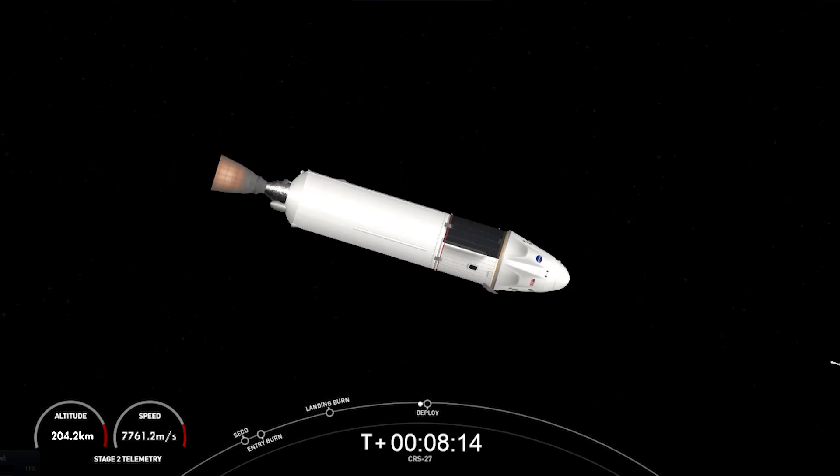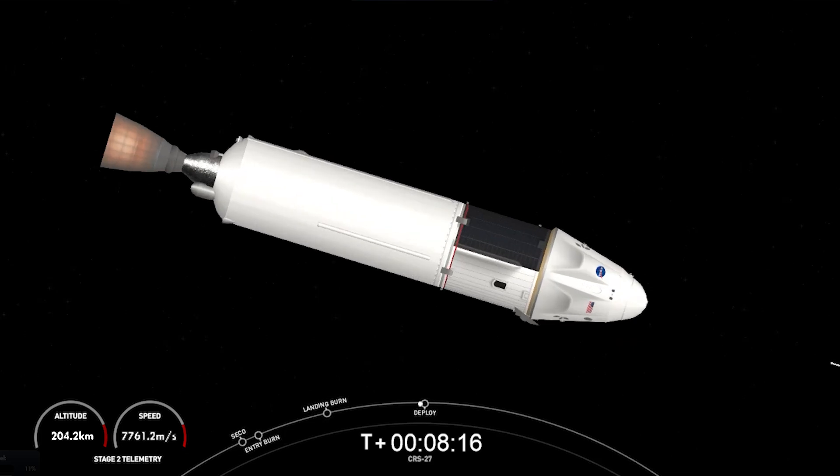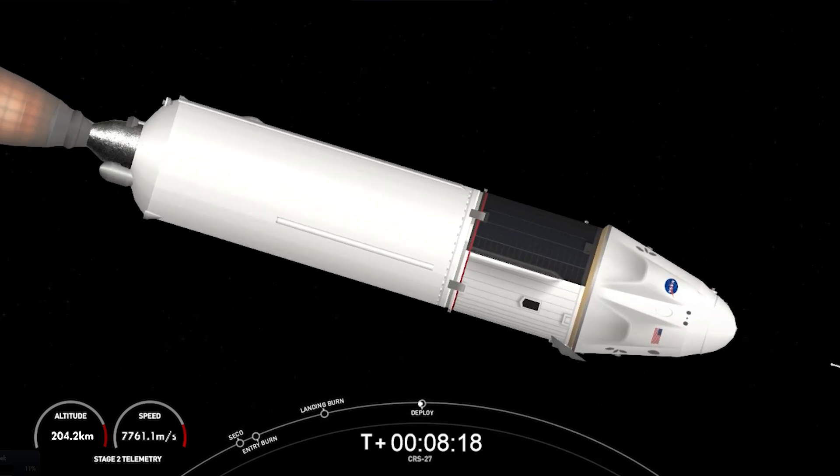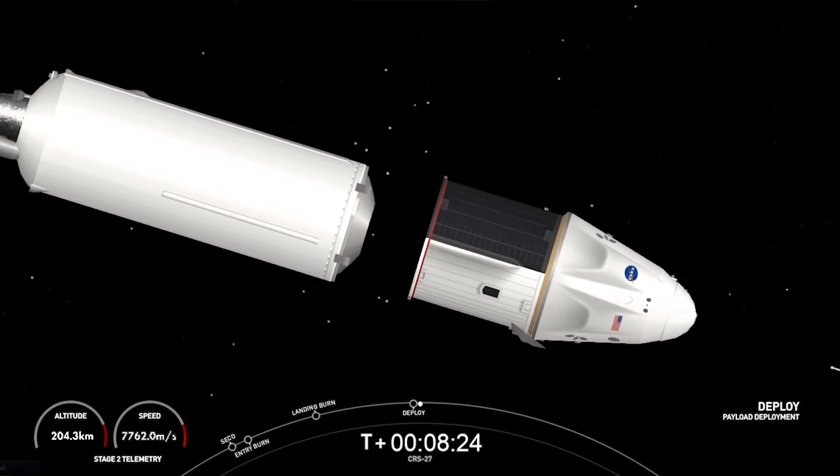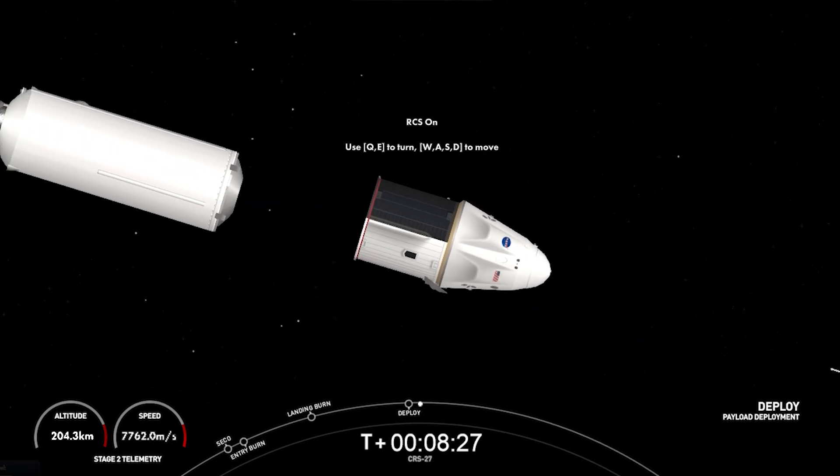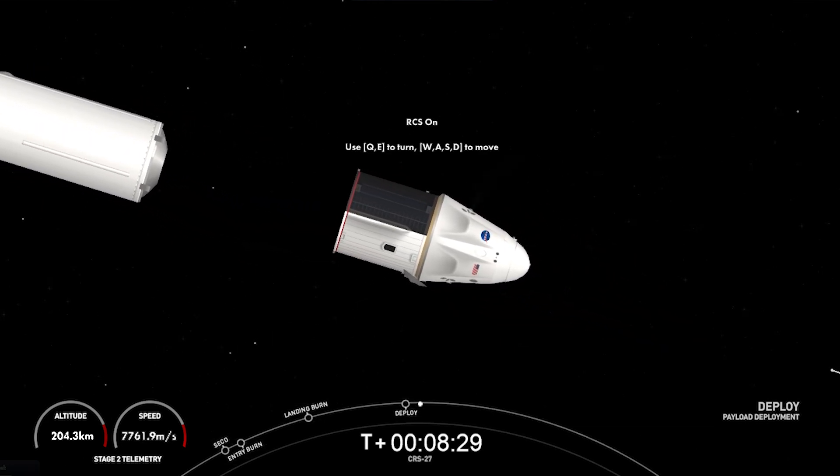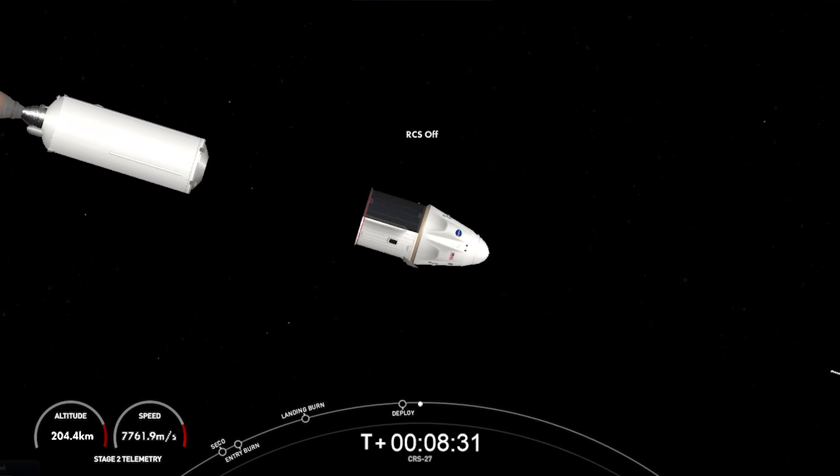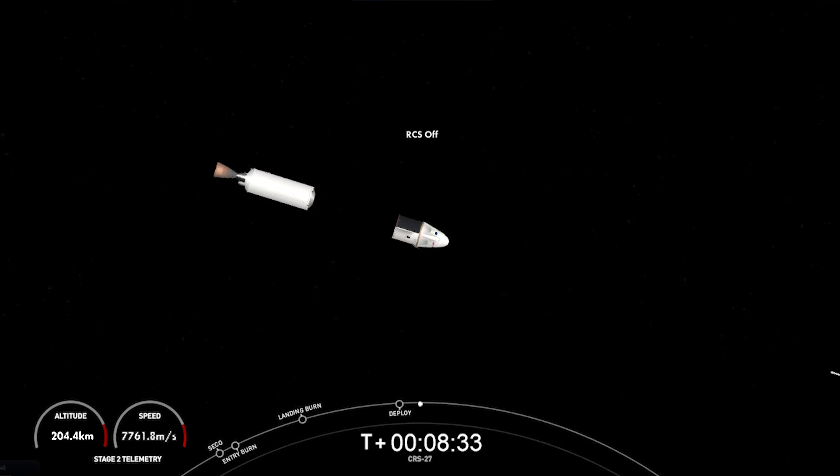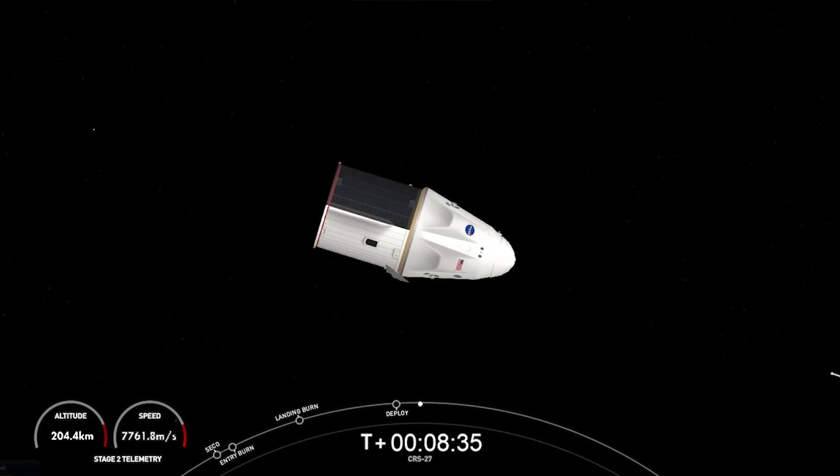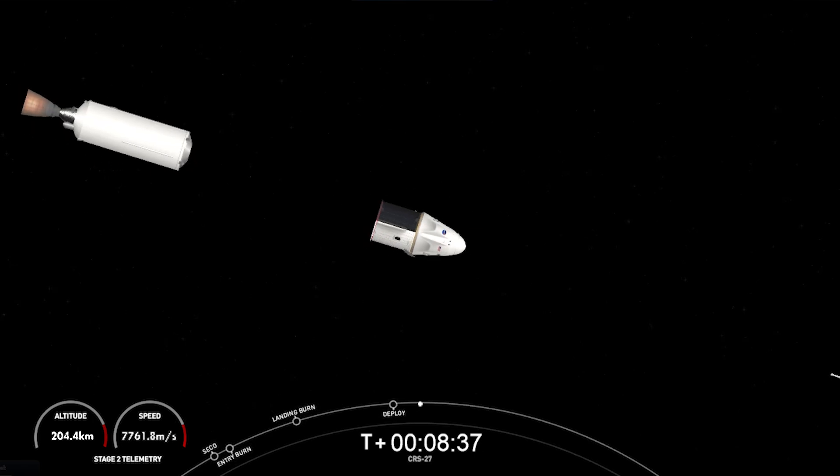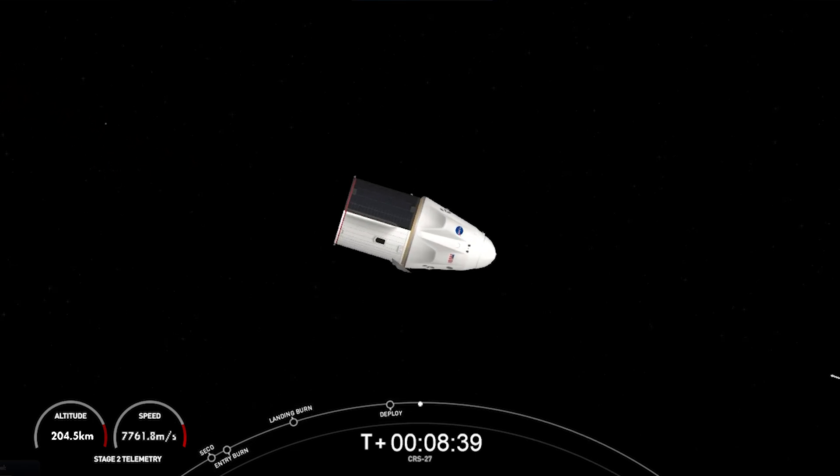CRS-27 will be joining the Crew-6 vehicle, currently on orbit. So we'll be back to having two Dragon spacecraft docked at the International Space Station. And if you're just joining us, you're watching a live view of Dragon successfully disconnecting from the second stage, heading to the International Space Station. This is the 27th commercial resupply mission to the International Space Station for NASA. And there you can see Dragon slowly drifting away from the second stage.